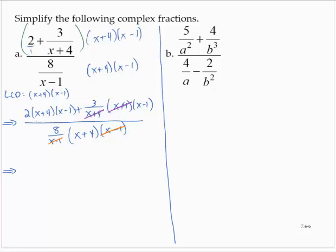2 times (x + 4) is 2x + 8, and that's being multiplied by (x − 1), giving 2x + 8 times (x − 1), which equals 2x² + 6x − 8. In the second term I have 3(x − 1), which is 3x − 3. In the denominator I have 8 times (x + 4), which is 8x + 32.